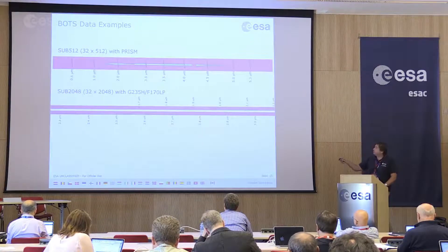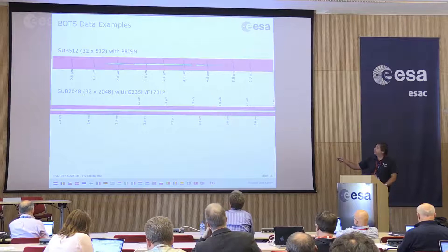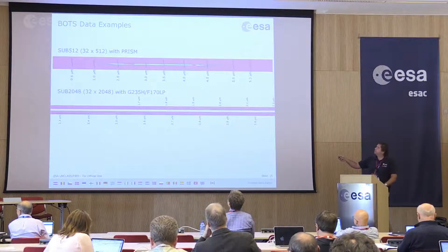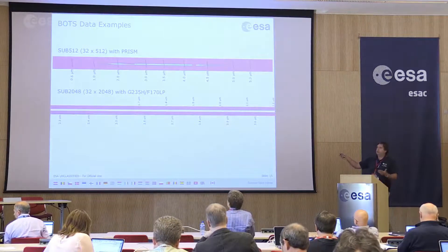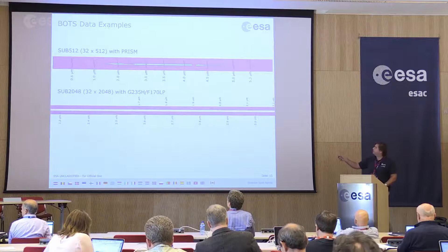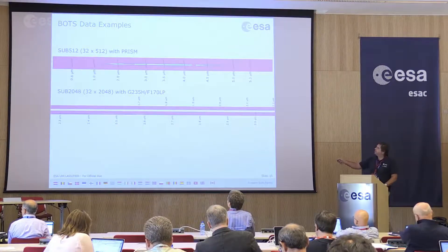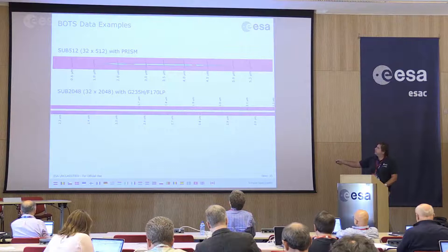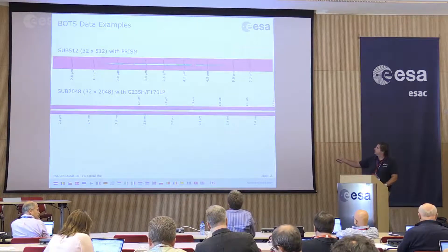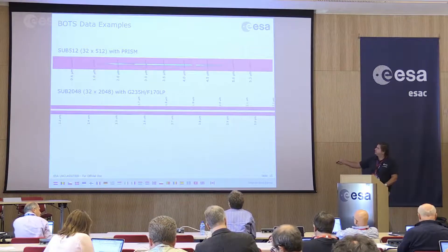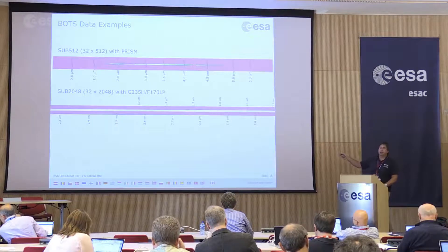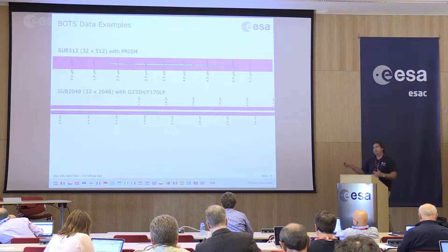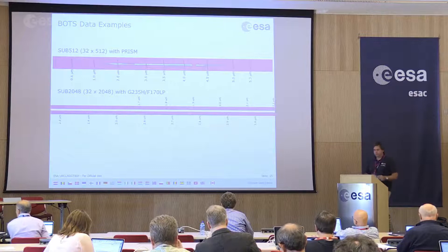Two data examples: a point source through this aperture with the prism using a 32 by 512 subarray shows a continuum spectrum with some absorption features. For the high-resolution grating, an example with a 32 by 248 subarray shows some curvature in the trace, but you get the full spectrum plus background on both detectors. There is a wavelength gap, and in this case you cannot recover it because there is only one slit and no way to dither.